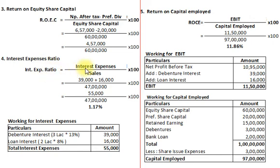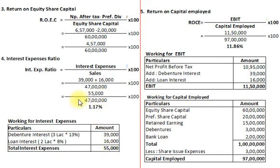The fourth ratio is interest expense ratio. Formula: interest expenses divided by sales multiplied by 100. Interest on 13% debentures on Rs. 3,00,000 = Rs. 39,000. Interest on 8% long-term bank loan on Rs. 2,00,000 = Rs. 16,000. Total interest = Rs. 55,000. So 55,000 / 47,00,000 × 100 = 1.17%.